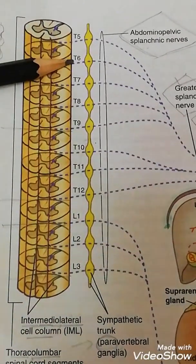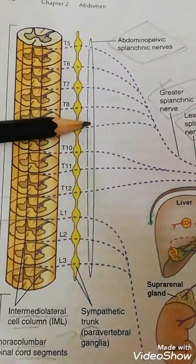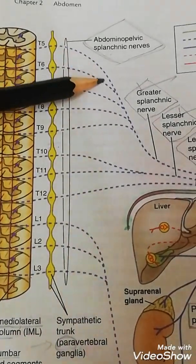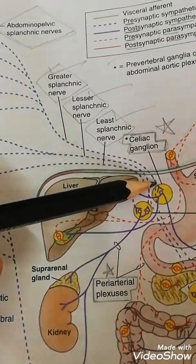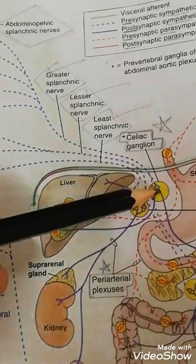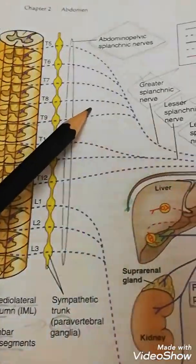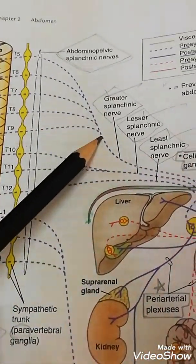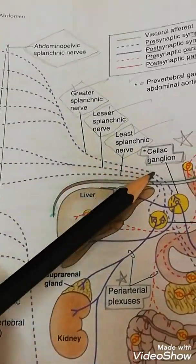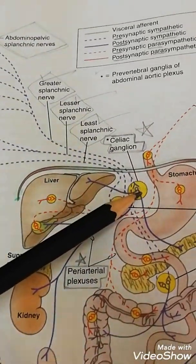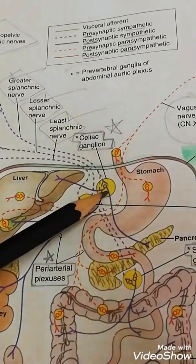Concentrate — this is T5, T6, T7, T8, and T9 spinal segments. They are joining to form the abdominopelvic splanchnic nerves and are going to supply various viscera in the abdomen, entering into the celiac ganglion. The greater splanchnic nerves are represented by dotted lines and are the preganglionic sympathetic fibers, because they are coming into the celiac ganglion, which is also called the prevertebral ganglion.